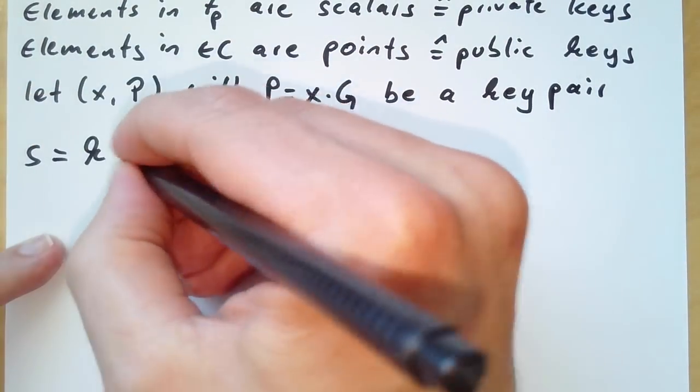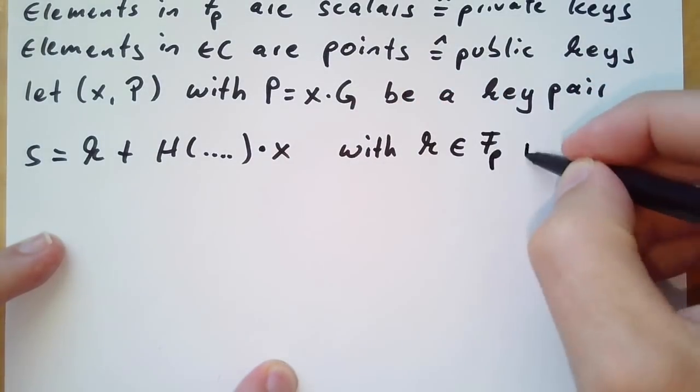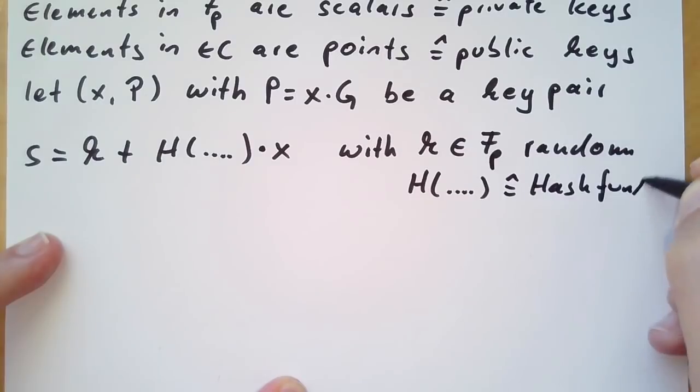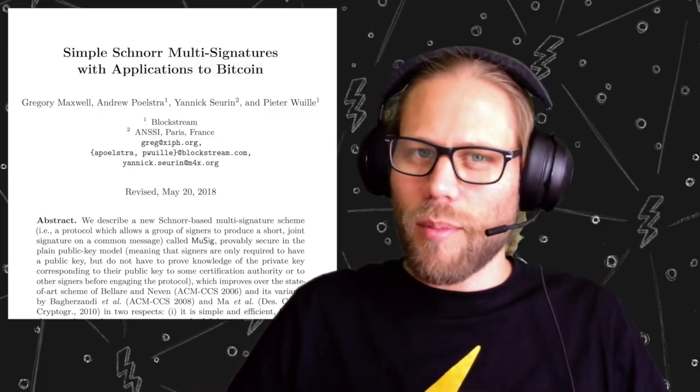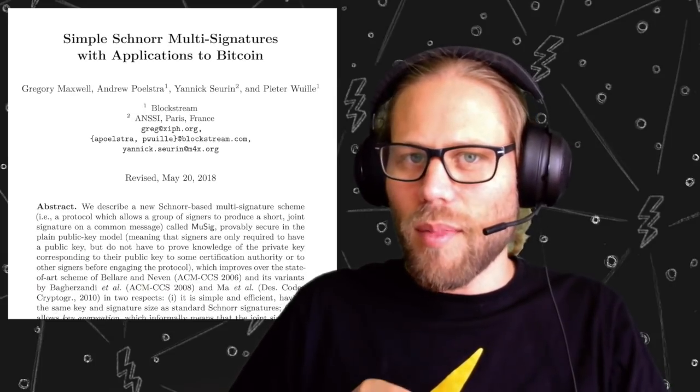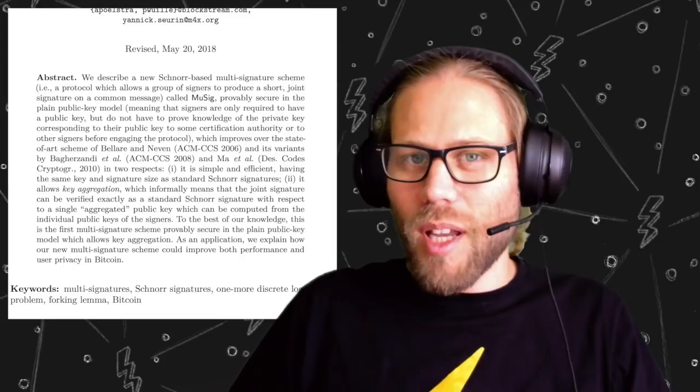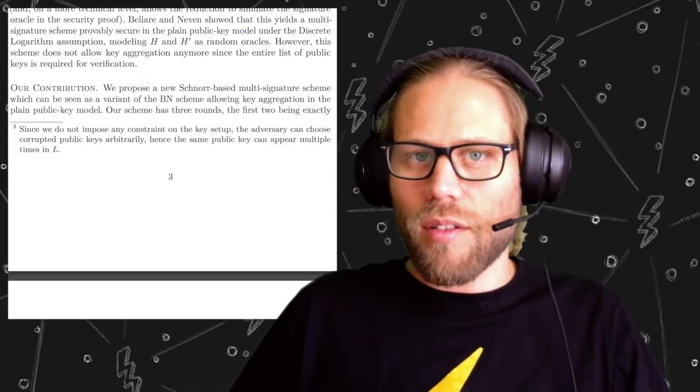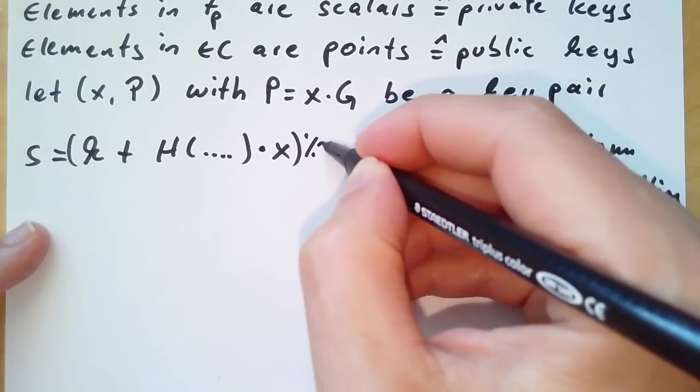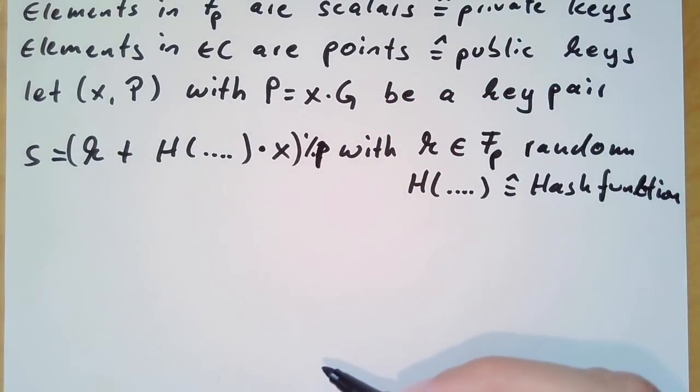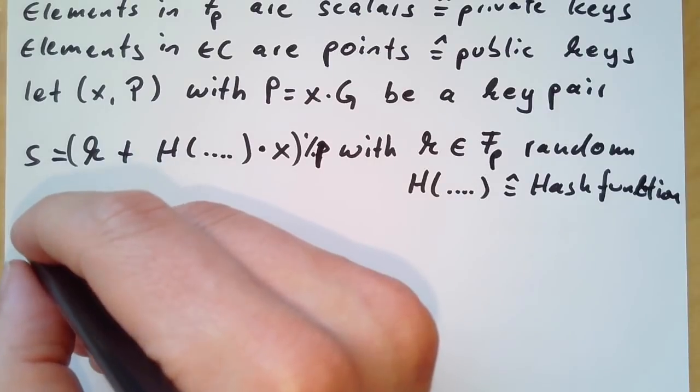We can already define our Schnorr signature as s equals k plus h times x, where k is a random value from our prime field and h is a hash function. For the sake of simplicity, I actually omit to tell you what exactly we're hashing. If you really want to know the details, I refer you to the music paper. The music paper explains you how to prevent rogue attacks by hashing the right values, not only the Bitcoin transaction, but also committing to the public keys and maybe to the nonces. So you should really read that paper if you want to know all the details. Here we will just assume that we're hashing the correct values. As you hopefully remembered, there's one special thing about these elements in this prime field. If we add them and the value is too big, we have to take the remainder after division with this prime number. And this is what we usually note with this percent p. In the future, I will omit this.